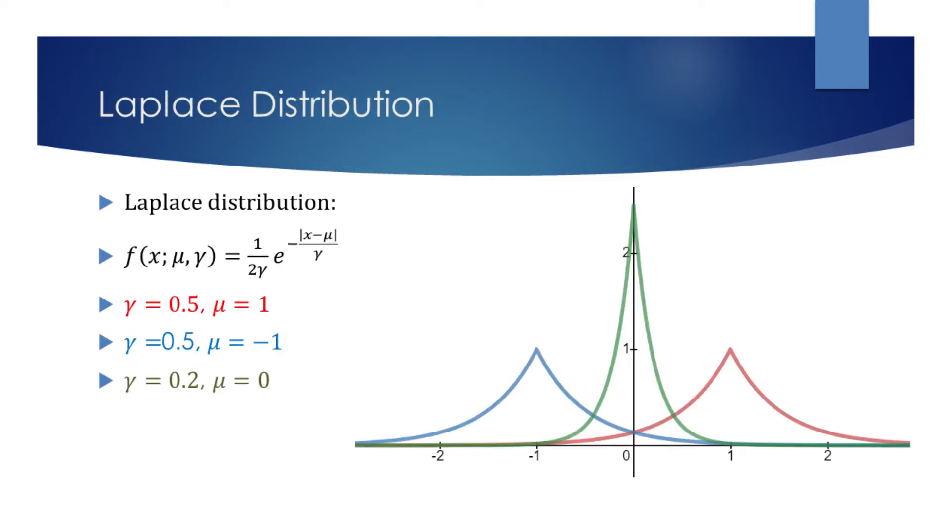We are now looking at a Laplace distribution. It is parametrized by mu and gamma. Mu determines the location of the peak.